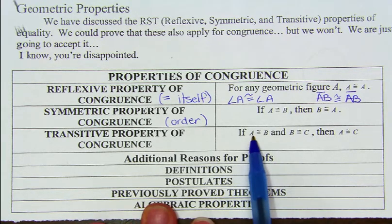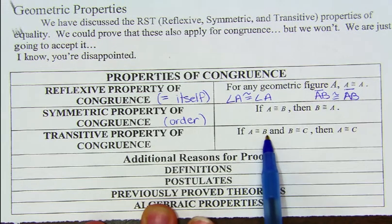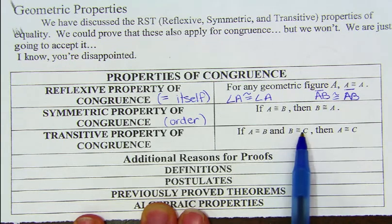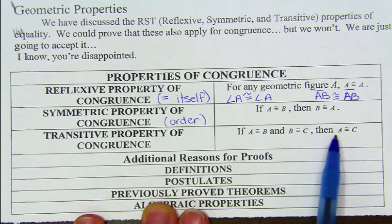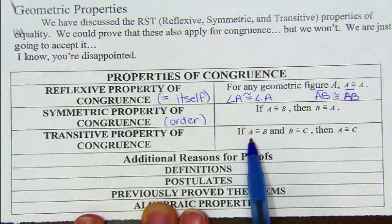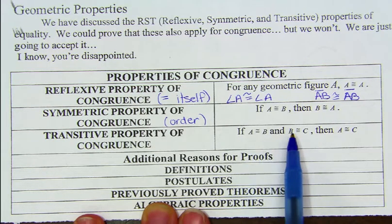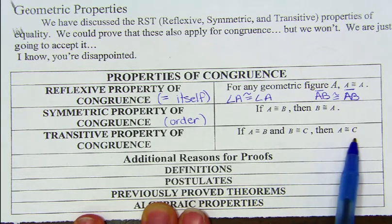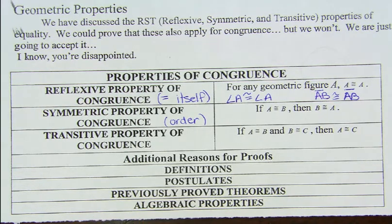So if we follow this: if A, thing 1, is congruent to B, thing 2, and B, thing 2, is congruent to C, thing 3, then thing 1 is going to be congruent to thing 3. Basically, if this thing is equal to that, and that thing is equal to this, then those two have to be equal also. So we just have three equal parts, and we're saying that things are equal. This is similar to substitution.